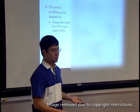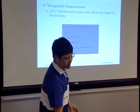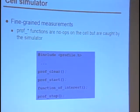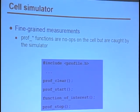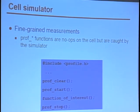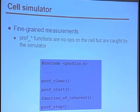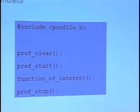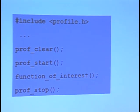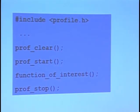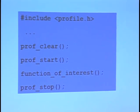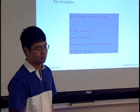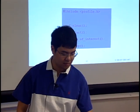You can also get more fine-grained statistics using these profiling functions. If you include profile.h in your program, then you get access to the functions profile_clear, start, and stop. When they get compiled into your program, there are no-ops when you run them on a real cell processor. But the simulator will be able to latch onto them and you can use those to start and stop regions of interest for profiling.